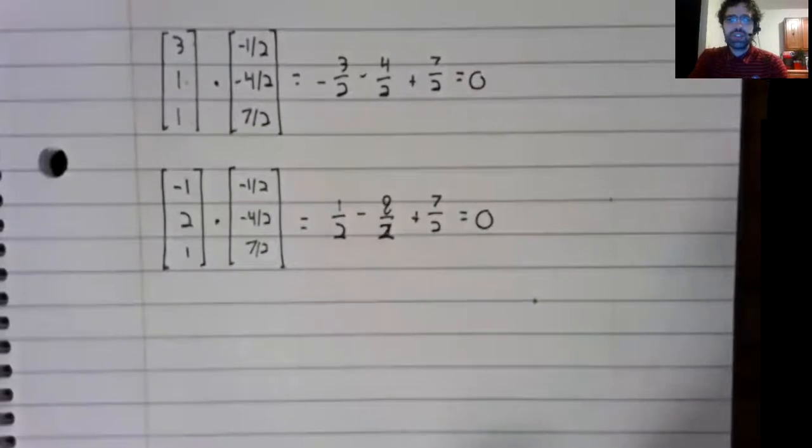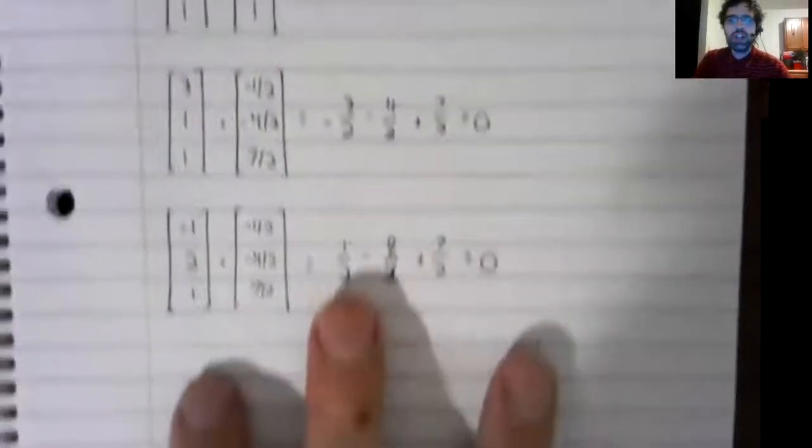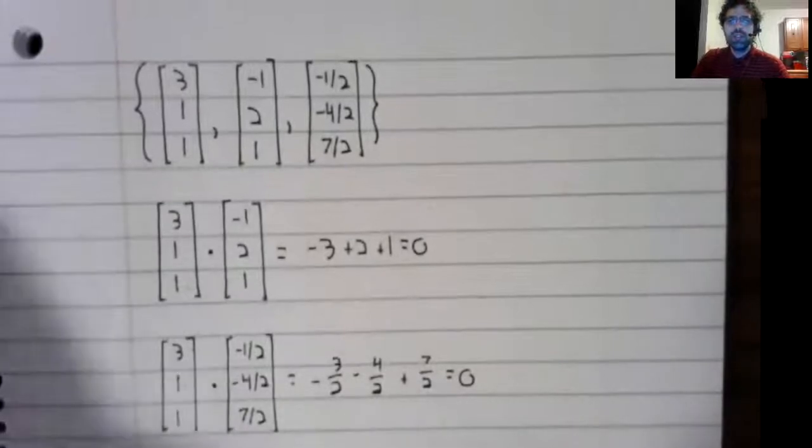So these vectors are pairwise orthogonal, so the set is orthogonal.